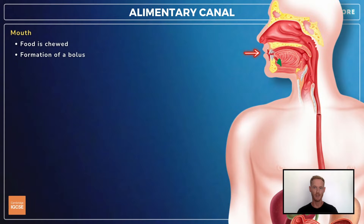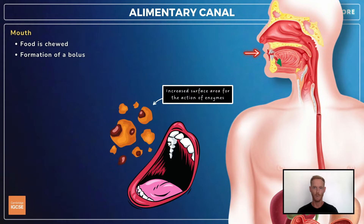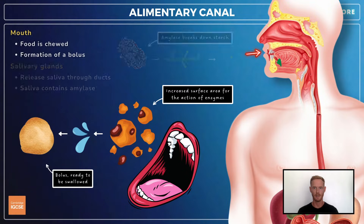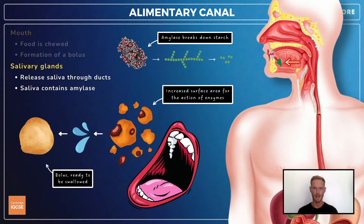Food is taken into the body through the mouth. Chewing, or mastication, breaks it down into smaller pieces that have a larger surface area for enzymes to work on later, and mixes it with saliva to form a soft mass called a bolus. Saliva is released by salivary glands through ducts, and contains an enzyme called amylase that begins to digest any starch consumed into simple sugars. This is why bread starts to taste sweet soon after it's been chewed.